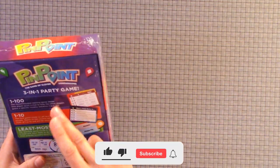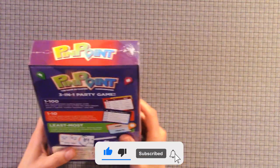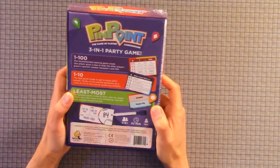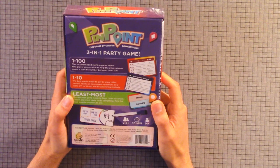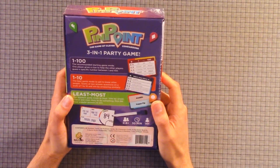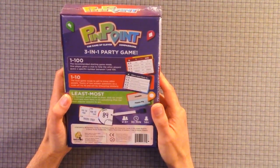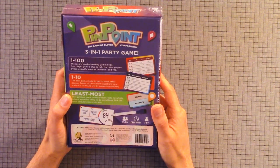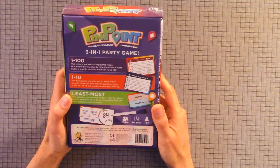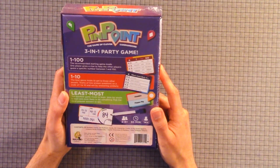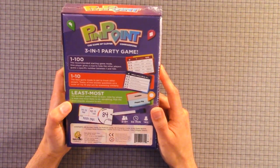So I'm going to read the back of it because there's three in one party game. 1 and 100, the recommended starting game mode. One player gives a clue to help the other players guess a specific number between 1 and 100. Then 1 and 10, the best game mode to get to know other people. Teams of 2 answer questions on a scale of 1 to 10 and win by answering similarly. Least most, the quickest game mode to learn. Vote from whom is least and most likely to do something, pick the most popular answer to win.